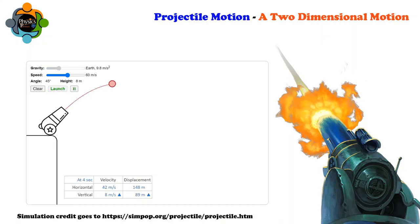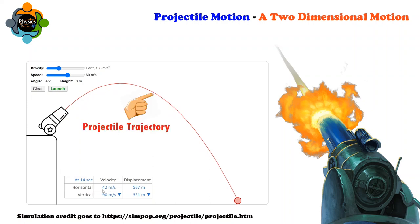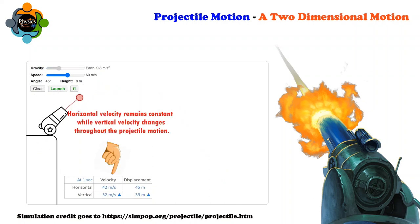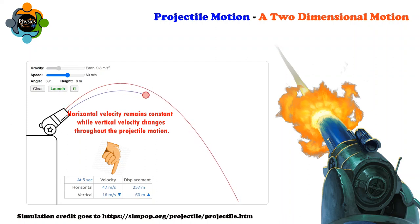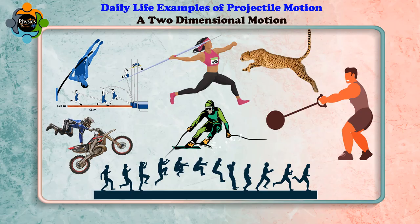When an object is launched into the air, it follows a curved path known as a projectile trajectory. The horizontal motion is unaffected by gravity, while the vertical motion is influenced by gravity pulling the object downwards.